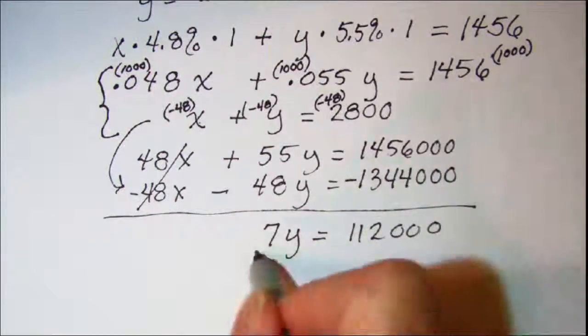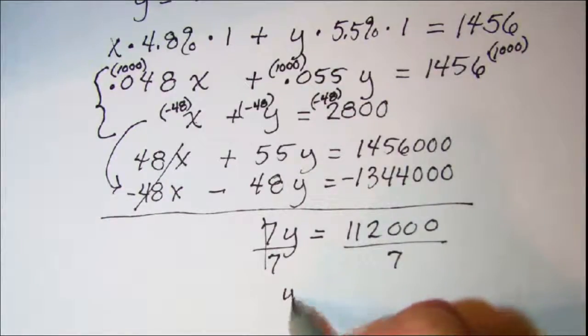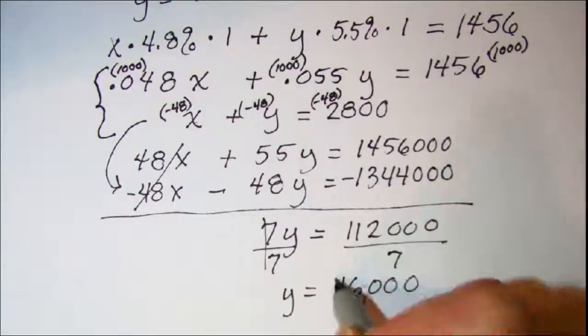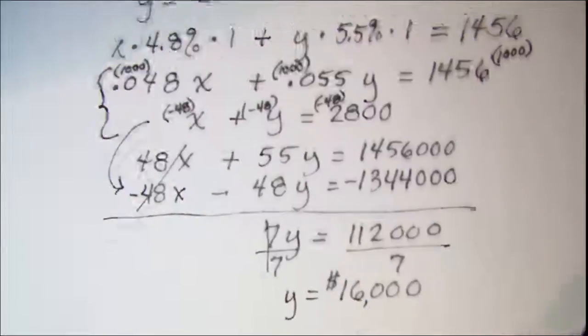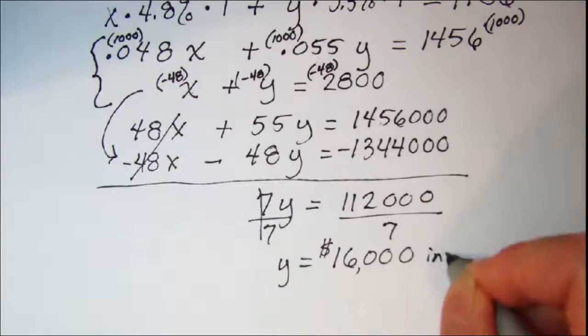Divide both sides by 7. It will cancel. And y equals 16,000. And this is the amount invested at 5.5%.